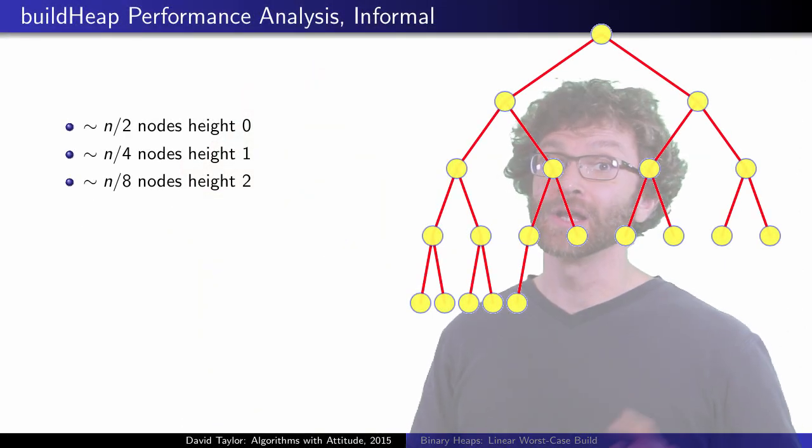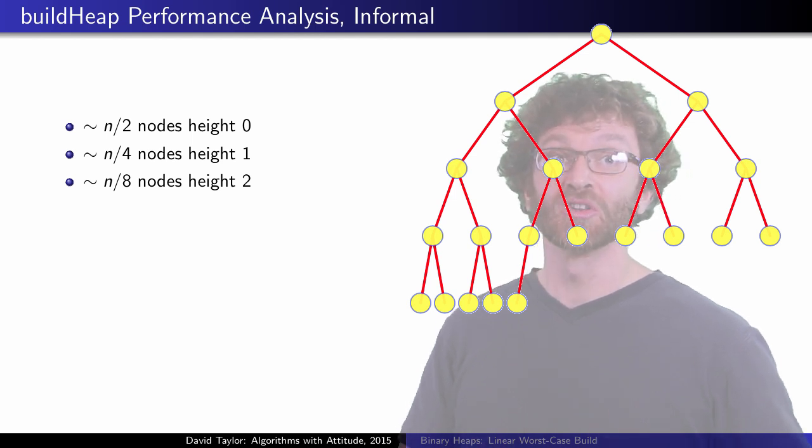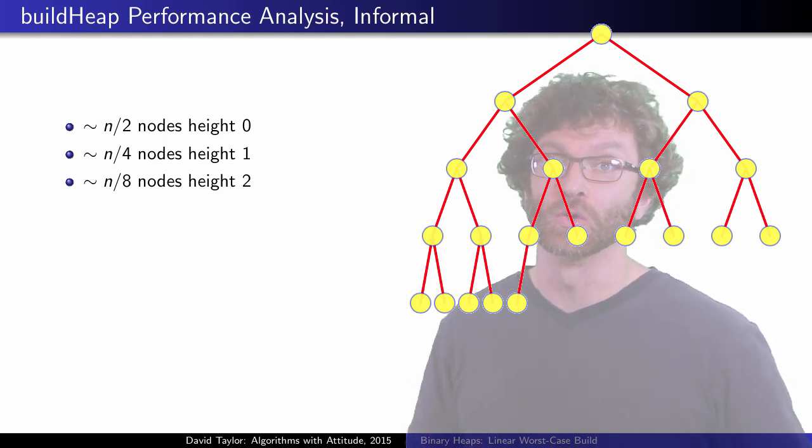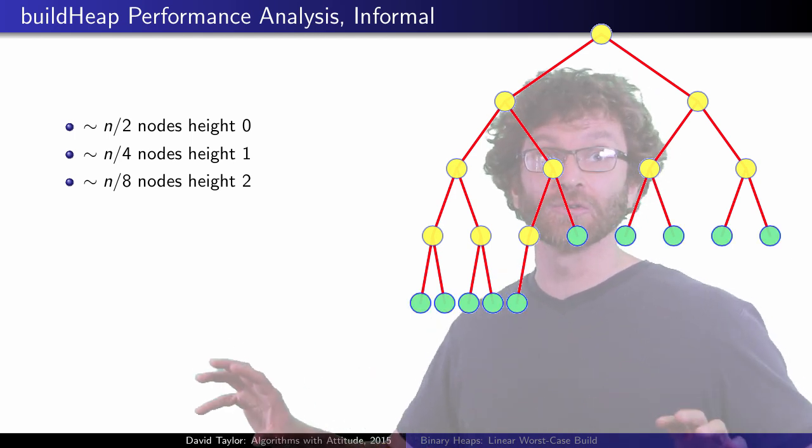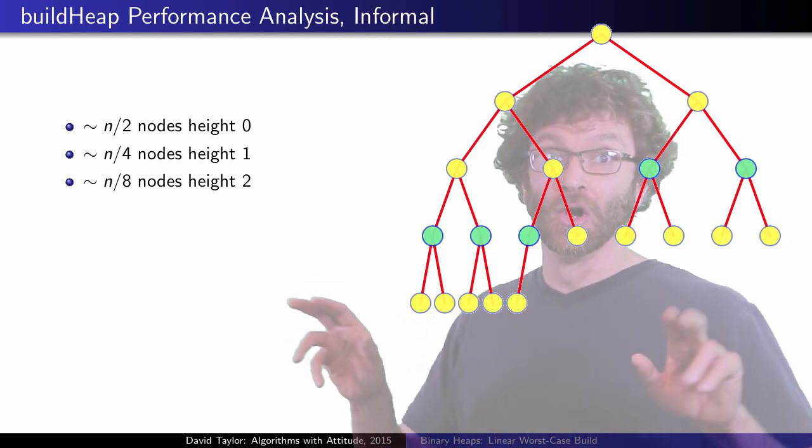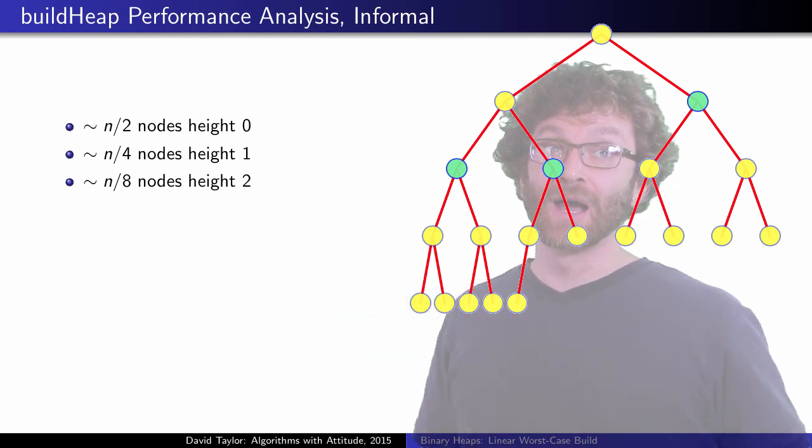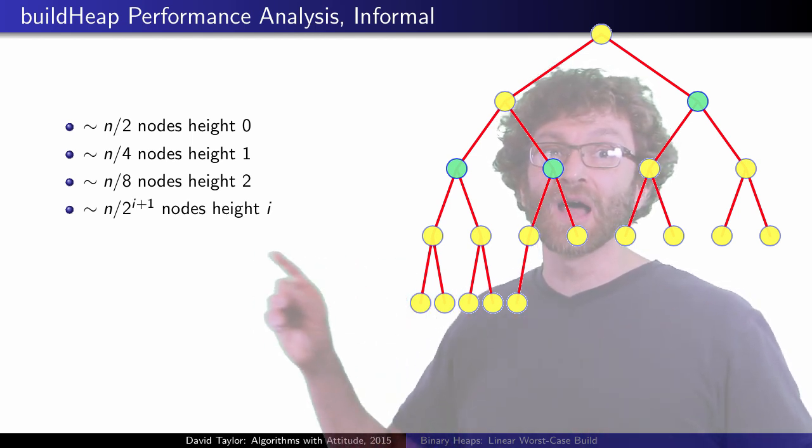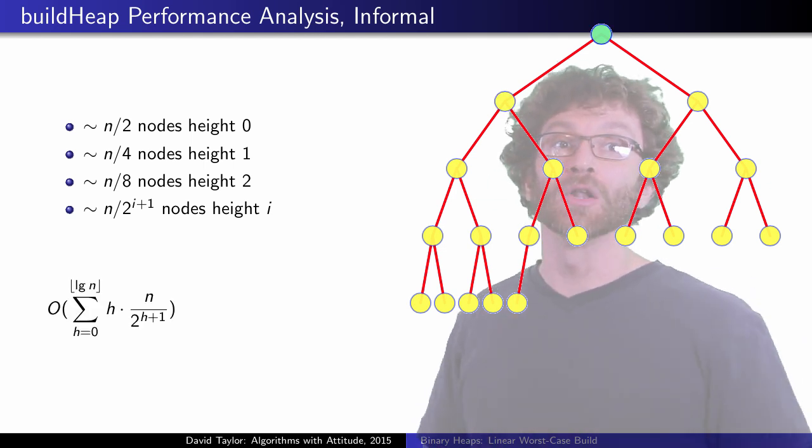Now for the analysis. For each heapify operation, the worst case run time is proportional to the starting height of that node. Here, we start off very well, because half of the nodes start at height 0 and can be skipped altogether. A quarter of the nodes move down one level, an eighth move down two levels, and we can generalize the number of nodes at any given height, and sum over all node heights.